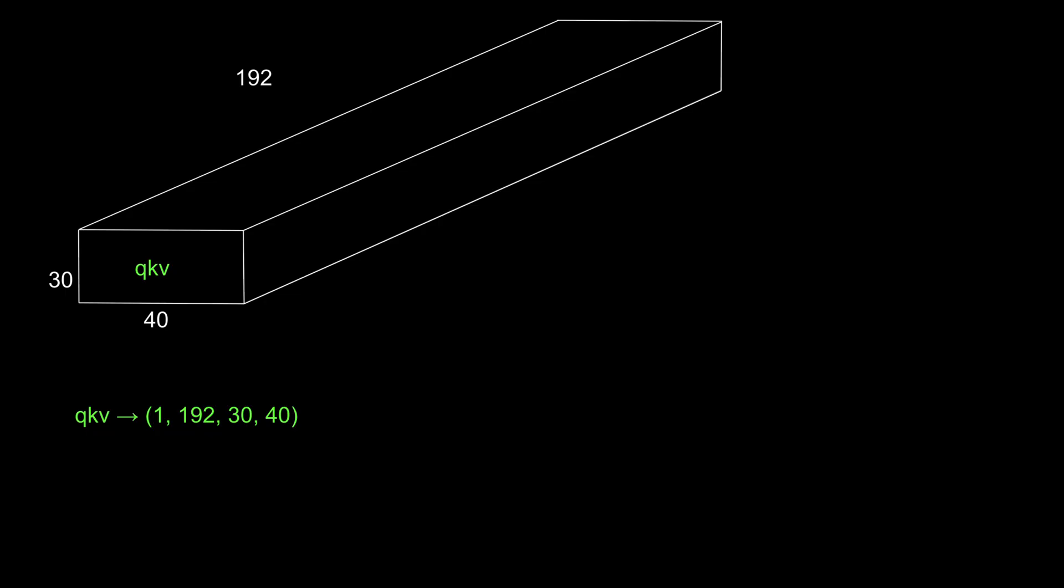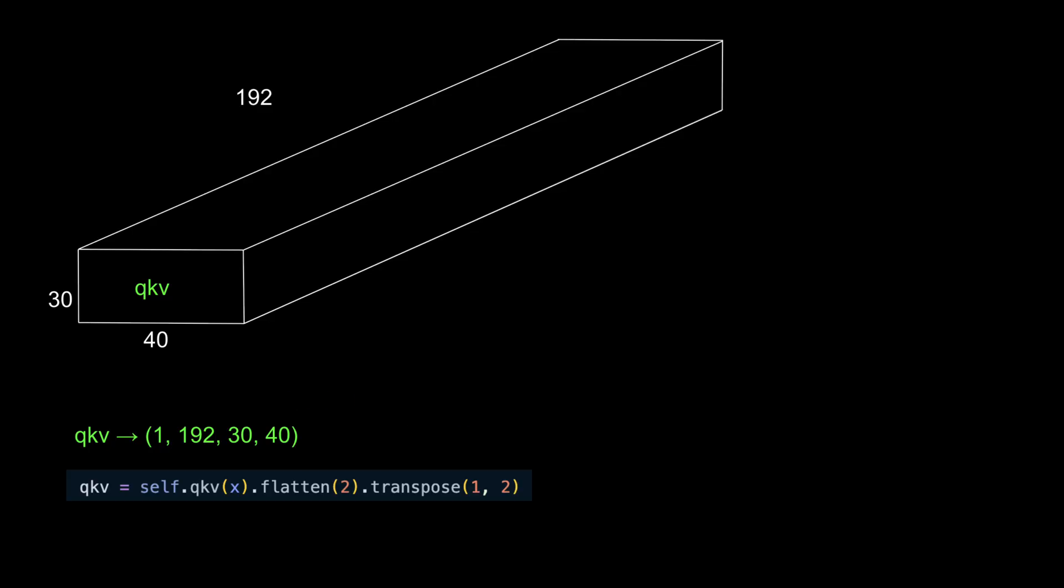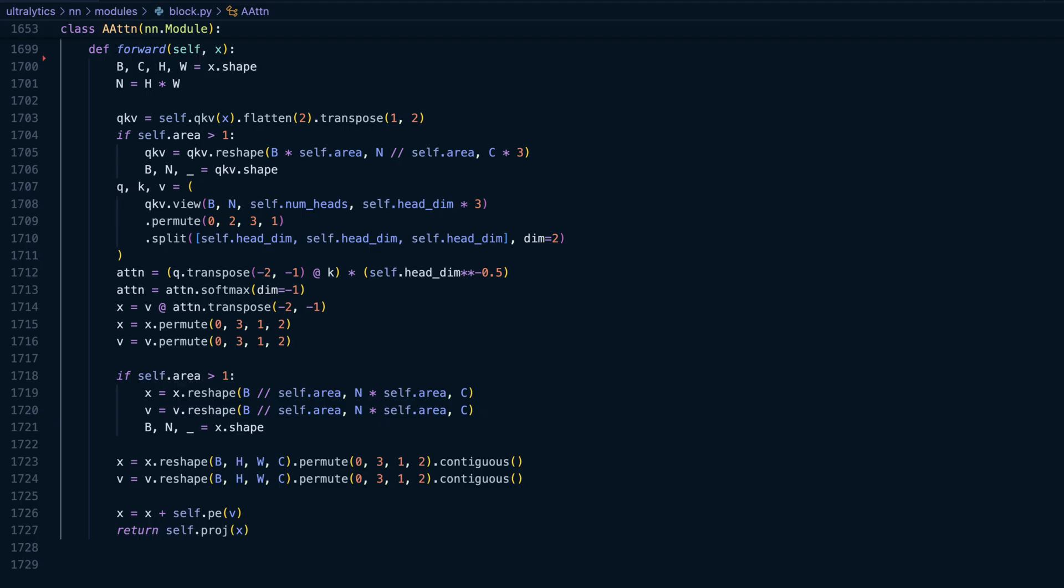Now before we can use this tensor, we need to perform a few additional transformations. First, we flatten the rows and columns into a single dimension. For visualization purposes, we'll keep the original shape, but mentally note that this gives us 1,200 spatial positions in the tensor. Then we transpose the channels and values to prepare the data for the attention mechanism. We continue with the forward pass.